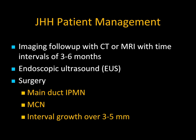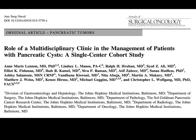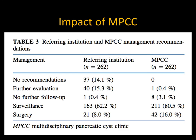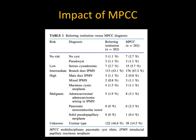At Hopkins, when you present to the pancreatic cyst clinic, you typically end up with imaging follow-up at three to six months, EUS, and surgery for main duct IPMNs, mucinous cystic neoplasms, or lesions growing over three to five millimeters per year. The challenge is: you hate to miss a pancreatic cancer, but you also hate to follow someone for no reason or do interventional studies unnecessarily.